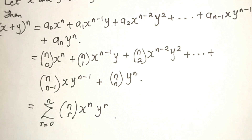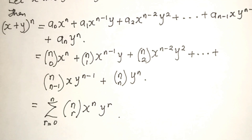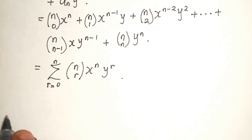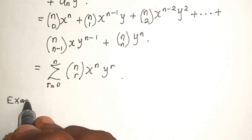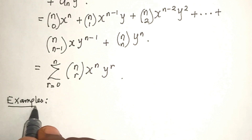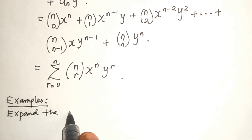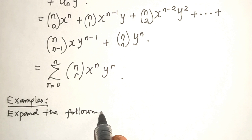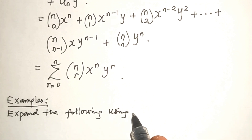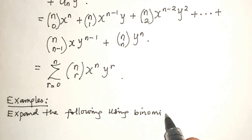The binomial theorem for positive integers uses combination to provide the coefficients of the expansion without going through the development of Pascal's triangle. Now let's take a few examples that will illustrate the binomial theorem for positive integers. We will expand the following using the binomial theorem.